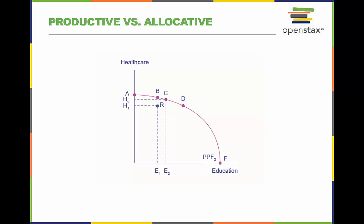Thus, all choices along the given production possibilities frontier like B, C, and D display productive efficiency. But point R, inside the curve, does not.